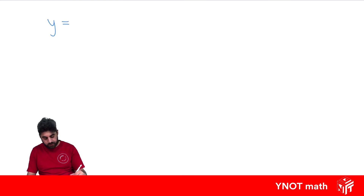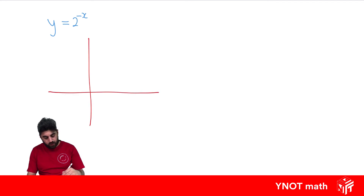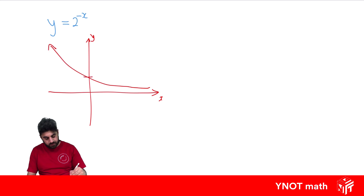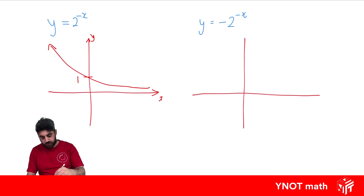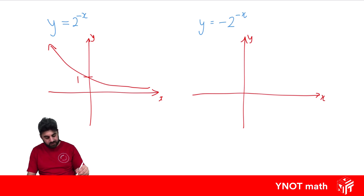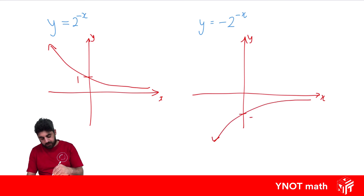What about y equals 2 to the minus x? Substituting minus x for x reflects the graph using the y-axis as the mirror — so it's flipped the other way, still going through 1. And for y equals minus 2 to the minus x, that's just the previous function with a minus in front, which flips it using the x-axis as a mirror — so it goes through minus 1 and gets closer and closer to the x-axis without ever touching it.